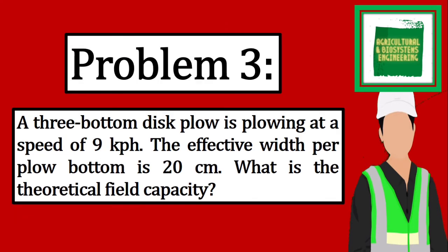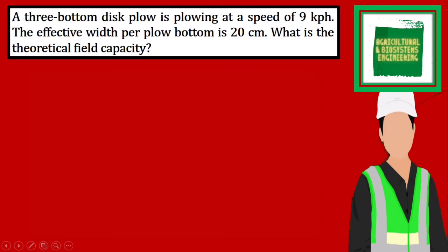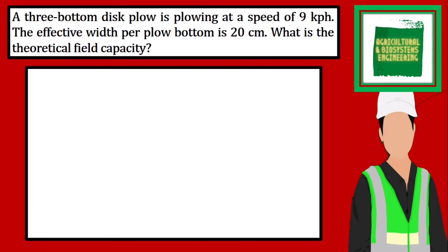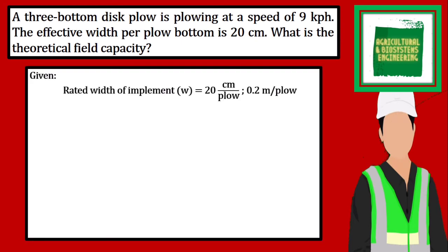Next, we proceed with problem 3. A 3-bottom disc plow is plowing at a speed of 9 kilometers per hour. The effective width per plow bottom is 20 centimeters. What is the theoretical field capacity?